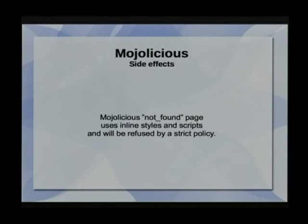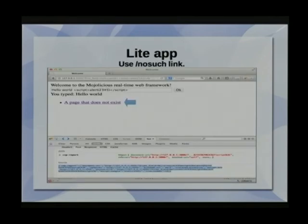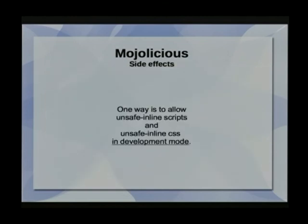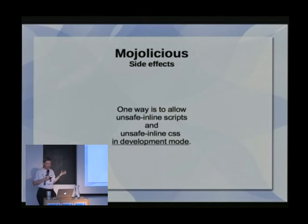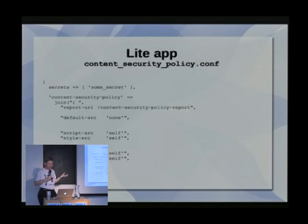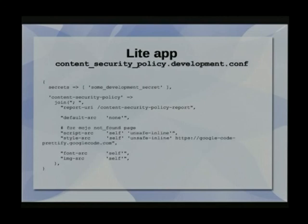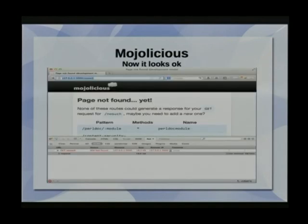So what is this? Are there any side effects? If you run Modulicious not-found pages, it will actually use inline styles and scripts, and these will be refused by a strict policy, which will look like this — if you go to a page that doesn't exist, something will look a little off. If you want it to look nice again, you can of course allow unsafe inline in your config, but only do it in a local development version, not in production. And now the page looks just fine again.